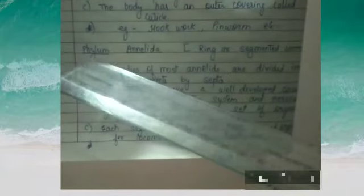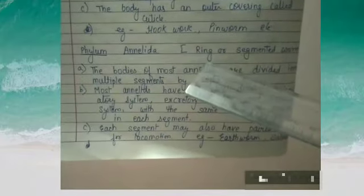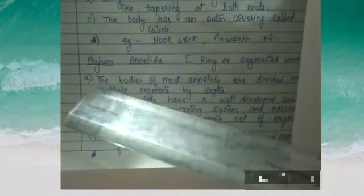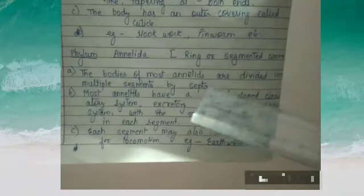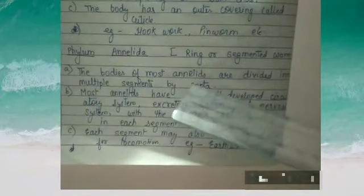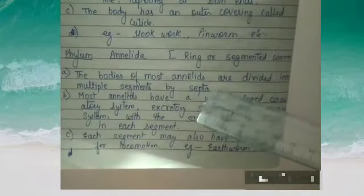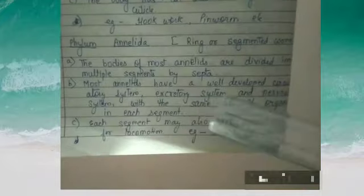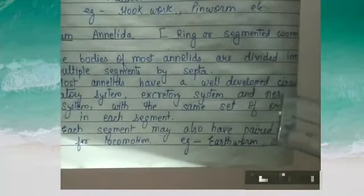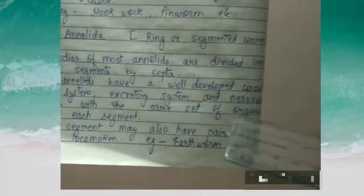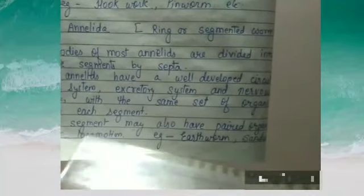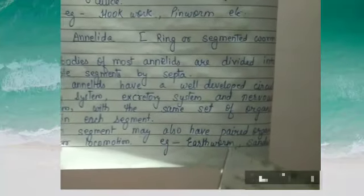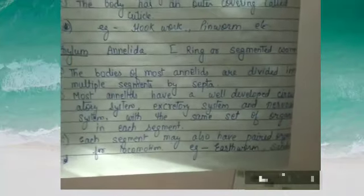Next is Phylum Annelida, meaning 'ring' or segmented worm. True segmentation is present in this phylum. The bodies of most annelids are divided into multiple segments separated by septa. Most annelids have a well-developed circulatory system, excretory system, and nervous system, with the same set of organs in each segment. Each segment may also have paired organs for locomotion. Examples include earthworm and sandworm.